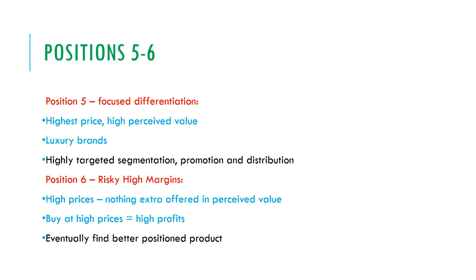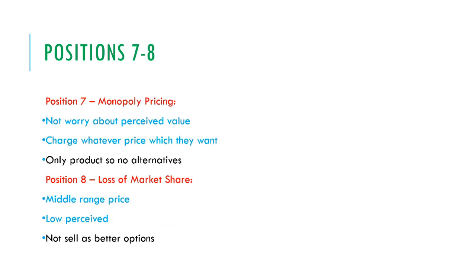In position 6, risky high margins, you have high prices but are not offering anything extra in perceived value. If people buy at high prices there will be high profits, but eventually consumers will find a better positioned product. In position 7, monopoly pricing, you don't have to worry about perceived value because you can charge whatever price you want as it's the only product with no alternatives. In position 8, loss of market share, you'll have a middle range price but low perceived value, so you're not going to sell well as there are better options available.